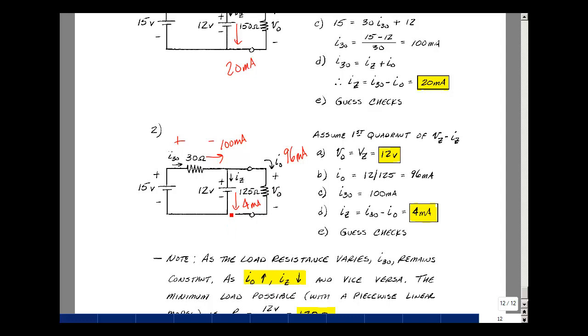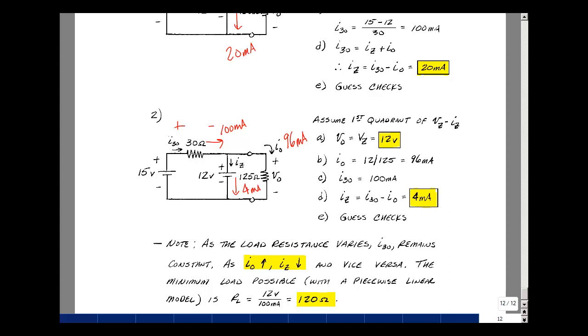Now there's another case to worry about: if the load got smaller. If it wanted all of this 100 milliamps, what would be the value of the resistor? Let's take 12 volts and divide it by 100 milliamps. That would be 120 ohms. If this was 120 ohms or smaller, the Zener diode wouldn't turn on. We would be between those two straight lines, which is between the minus V d on and the plus V sub Z.